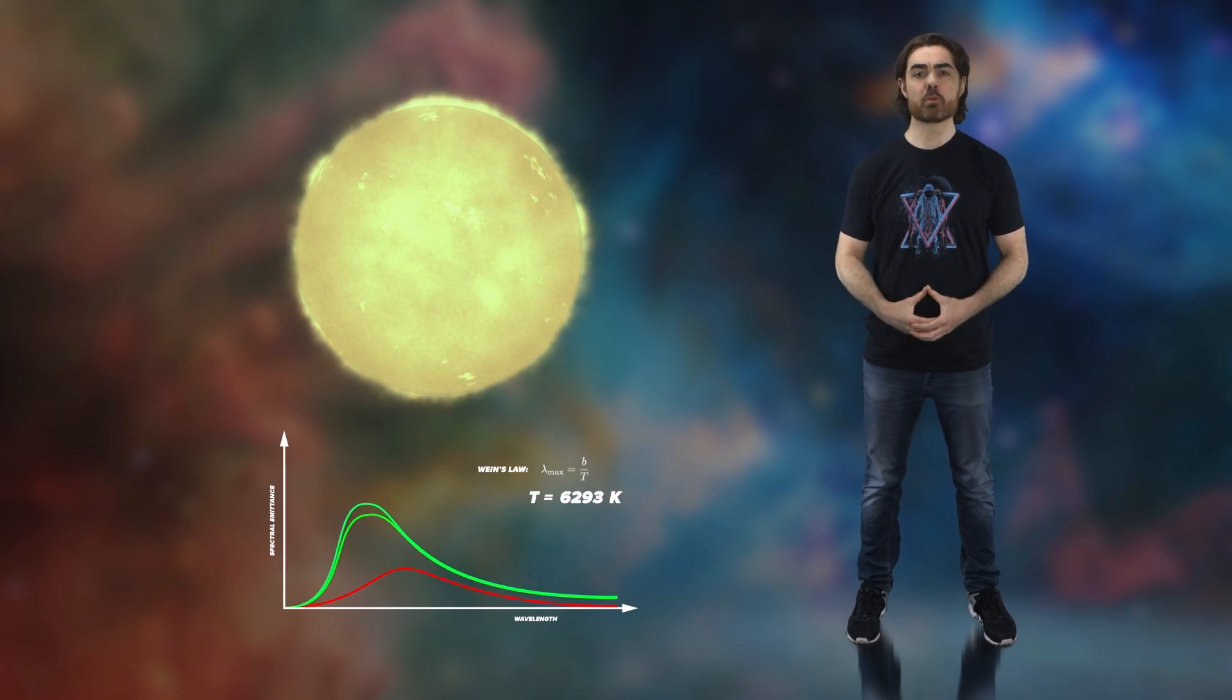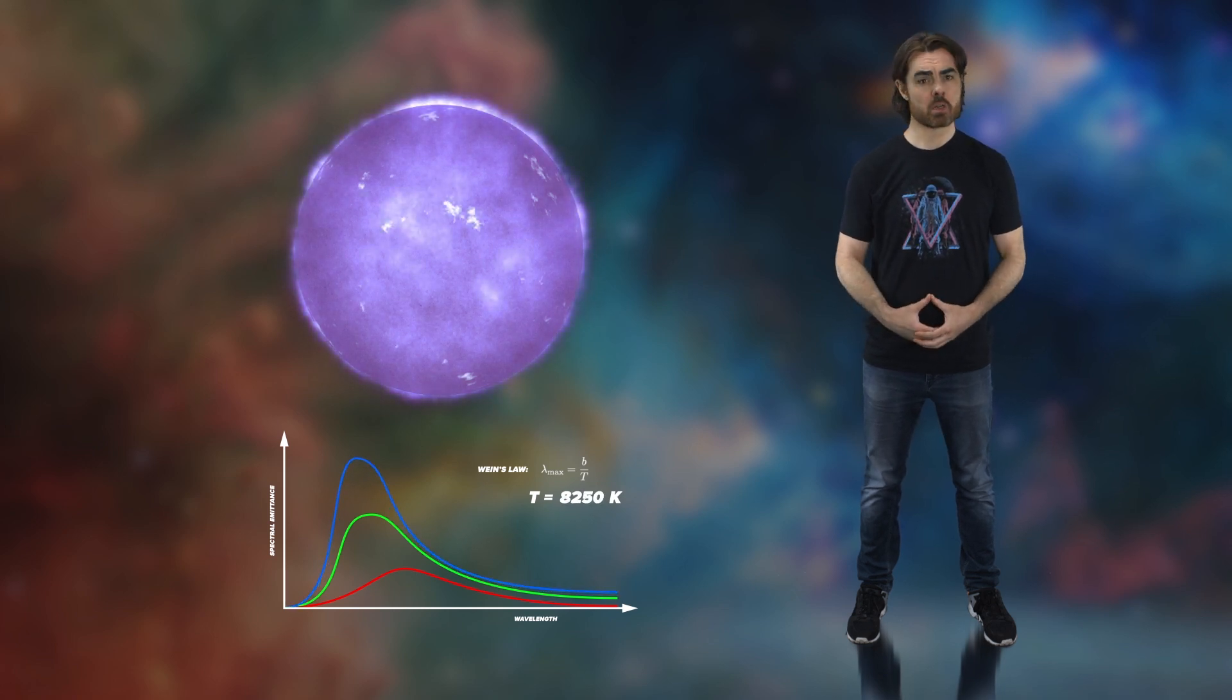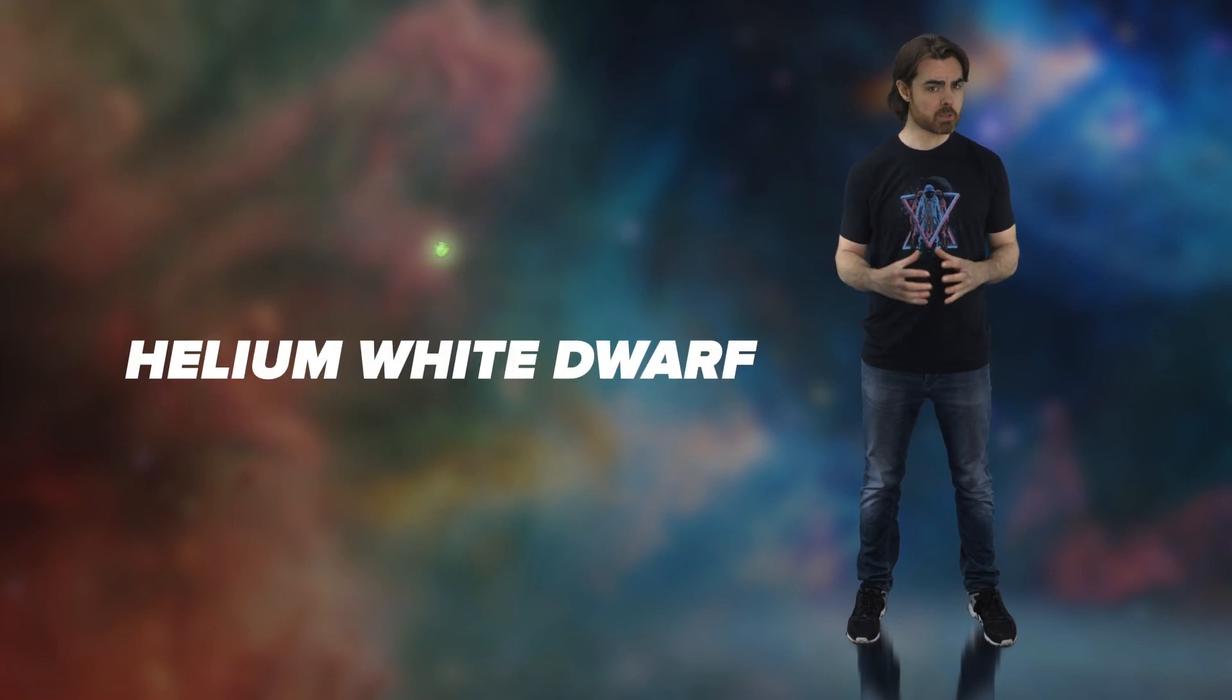In the final few billion years of their lives, some red dwarfs may even become hotter than our sun, developing a faint blue tinge. Finally, with the last hydrogen fuel spent, the entire star will become composed of helium and will quietly contract into a helium white dwarf supported by quantum mechanical electron degeneracy pressure. It will slowly radiate away its internal heat for another several billion years before turning black.